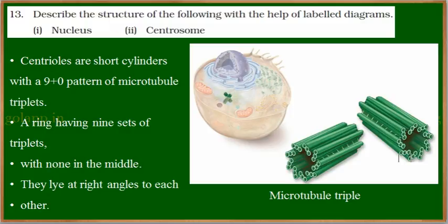Describe the structure of the following with the help of a labeled diagram. In the previous question we understood the function of nucleus. Now let us learn the structure of centrosome. Centrosome is generally found in animal cells. They are absent in plant cells. Here we can see the structure of centrioles.